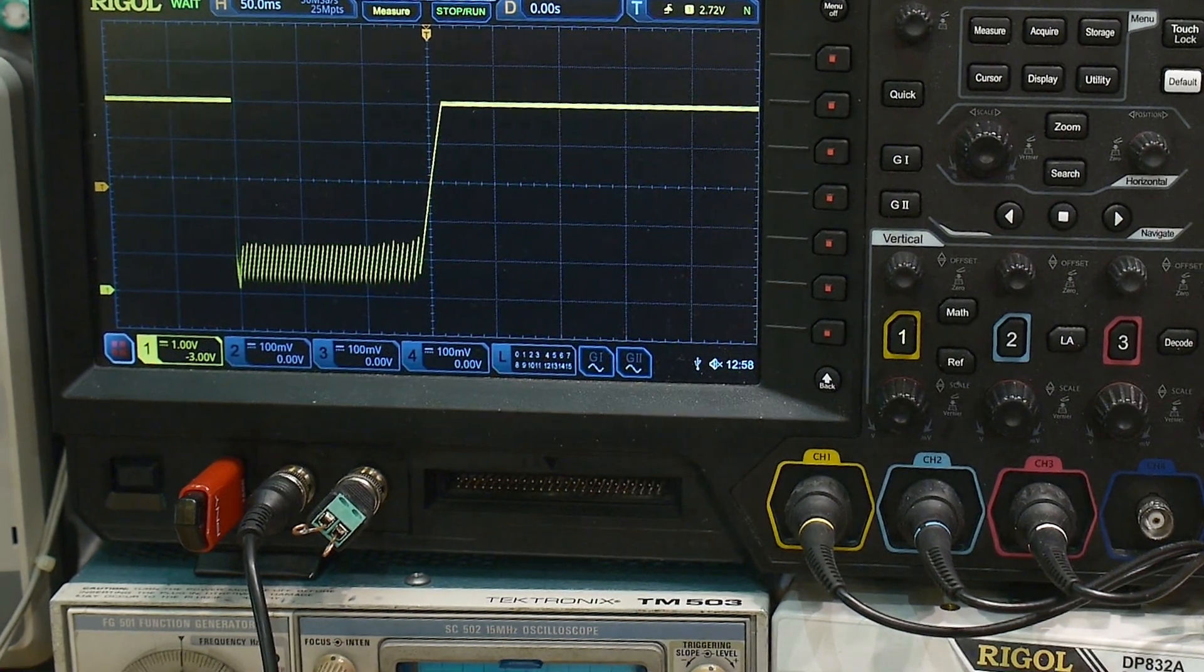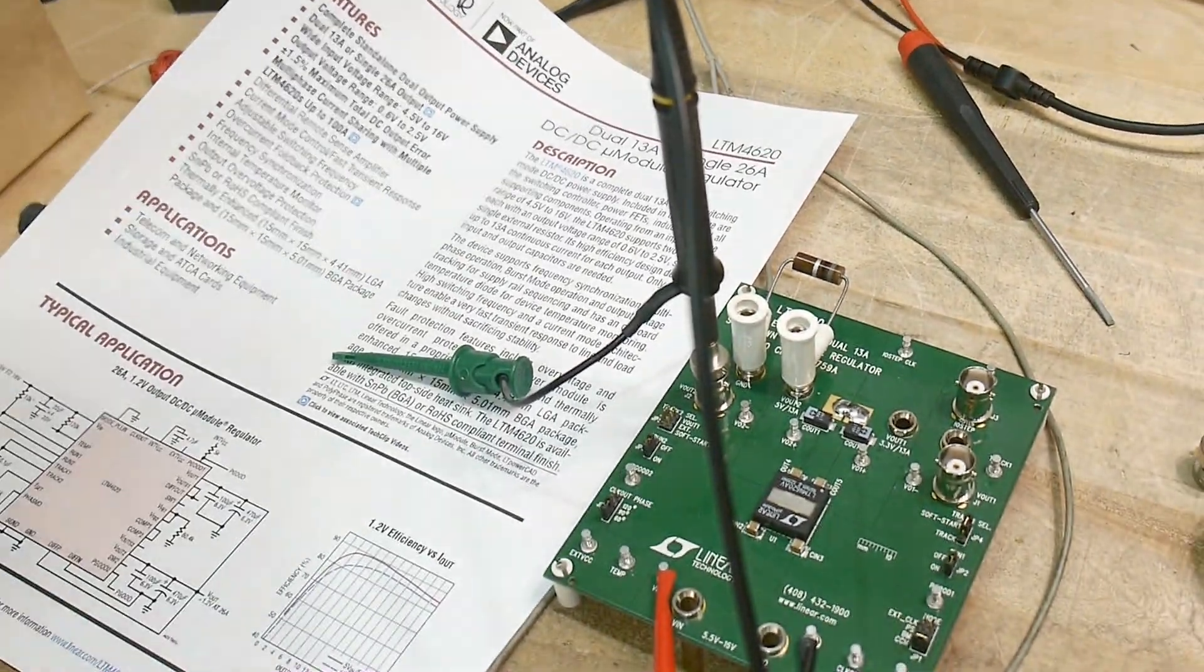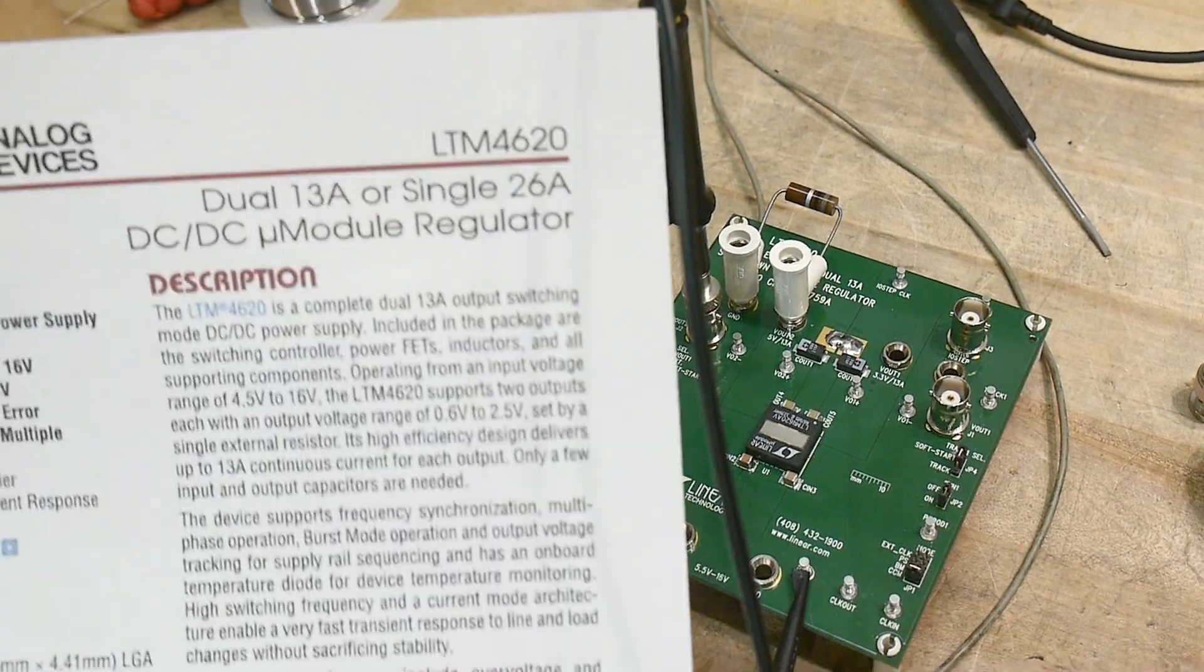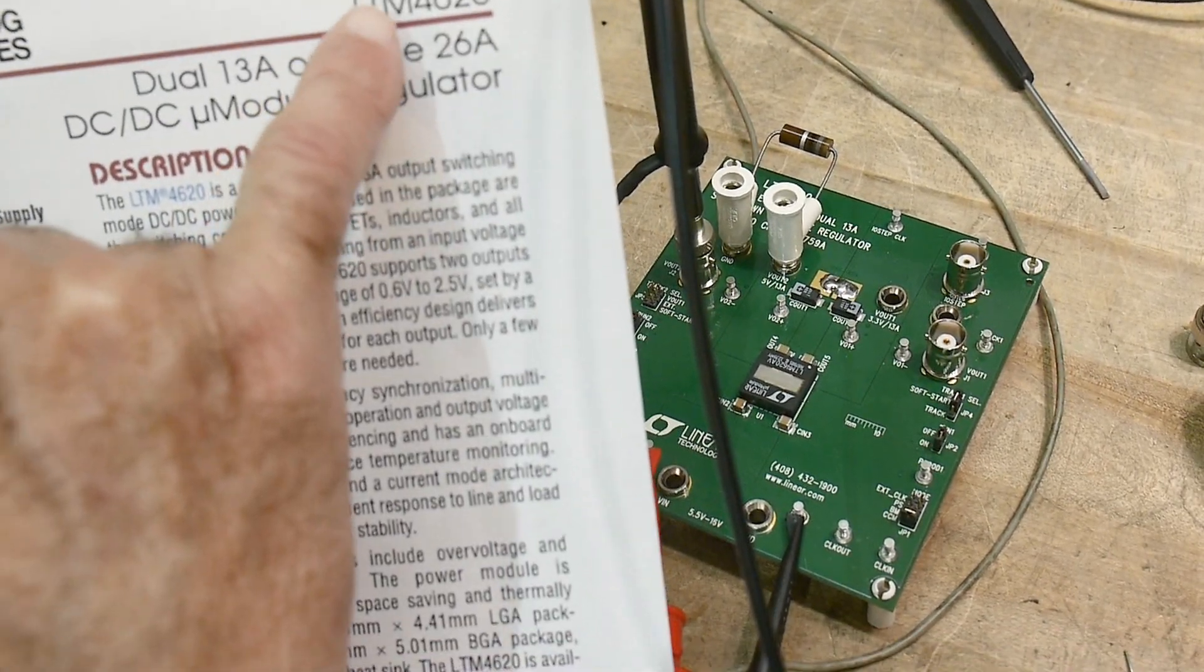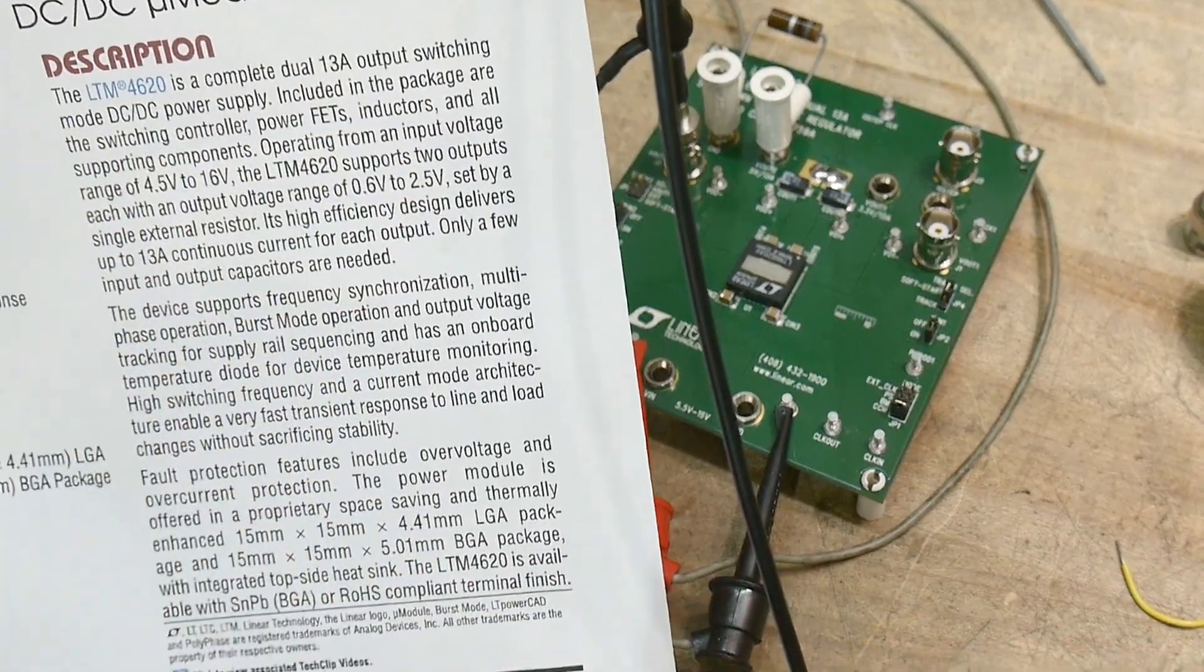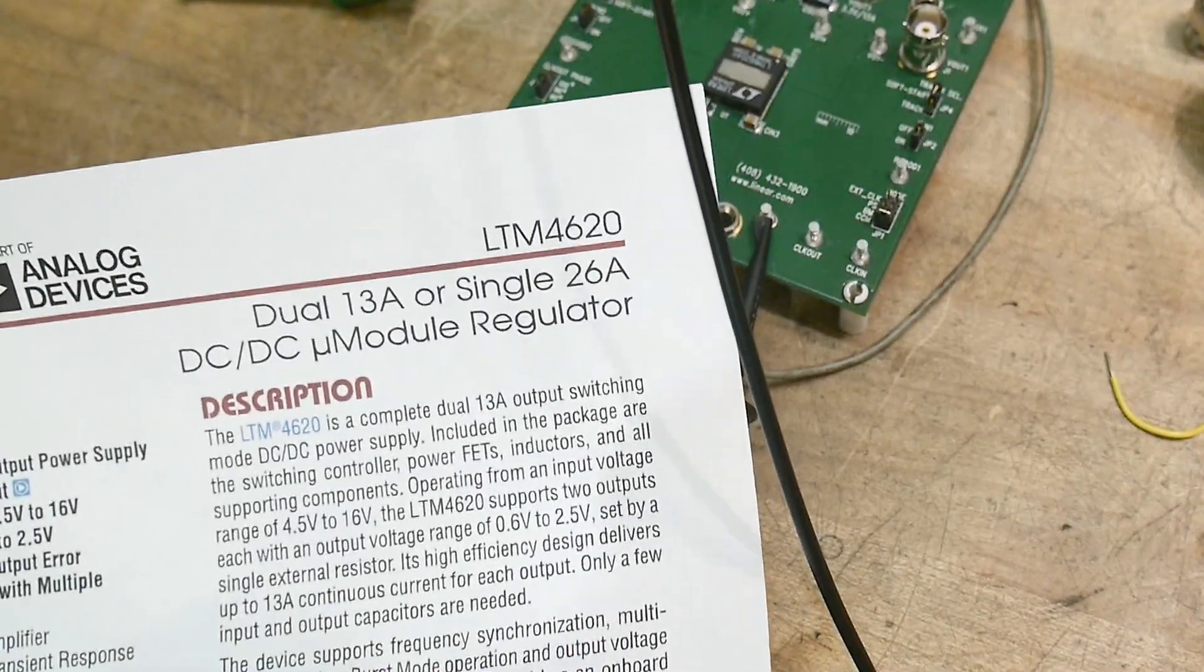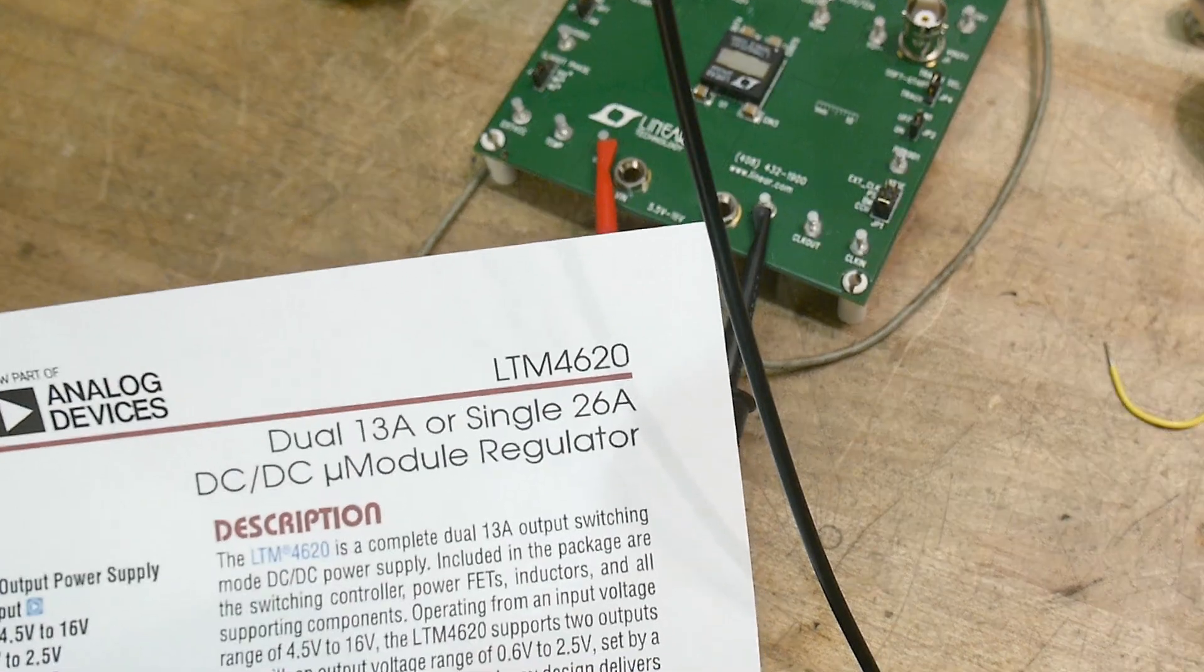But like I said, 75 bucks, it better be nice. Yeah. Alright. And what did I say? Chip of the day. It's an LTM 4620. Whoa. Look at that. My camera is going down. Going down. Going down. Alright. There you go.